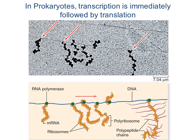So multiple proteins are being made as the transcript is still being transcribed by RNA polymerase. This is one big difference between prokaryotes and eukaryotes: in prokaryotes, since there is no nucleus, everything happens in the cytoplasm, and transcription and translation are going on almost simultaneously — the ribosome is already starting to translate the transcript and make proteins while RNA polymerase is still transcribing, everything happening in the same place.